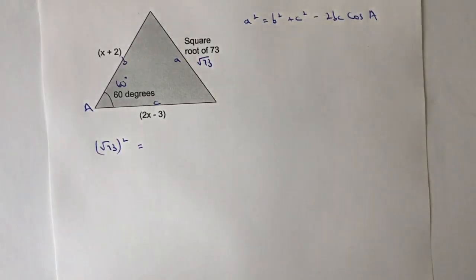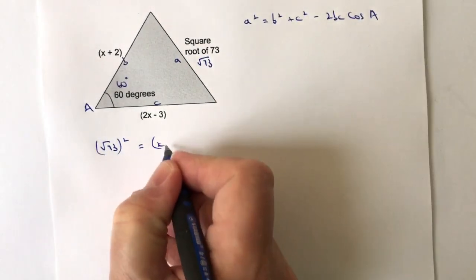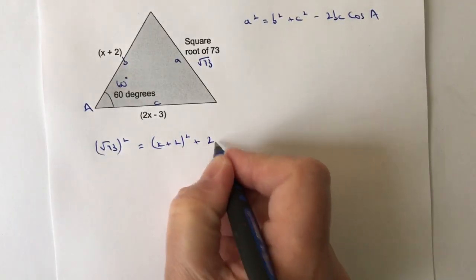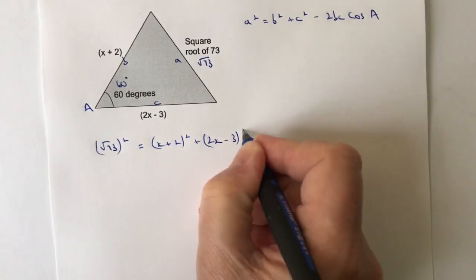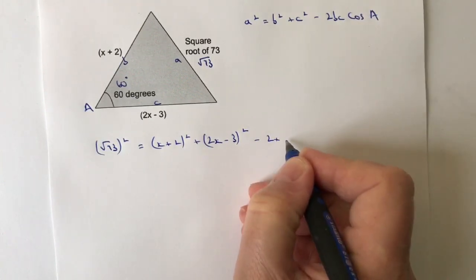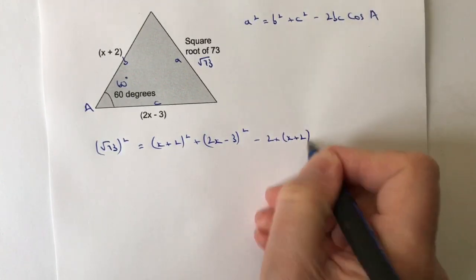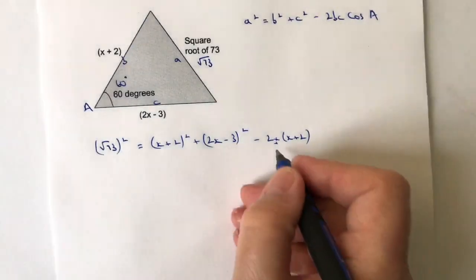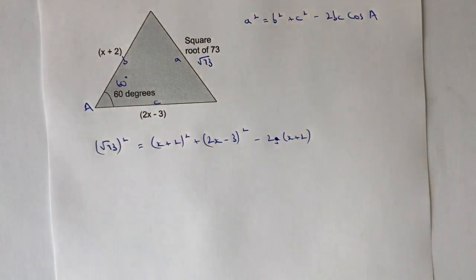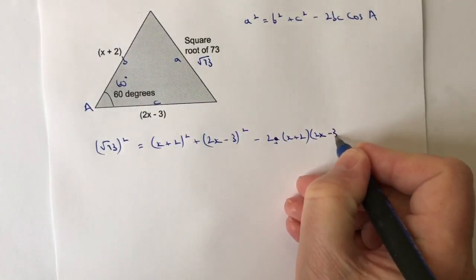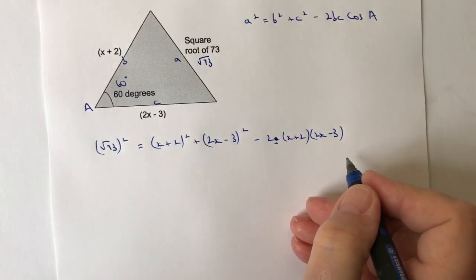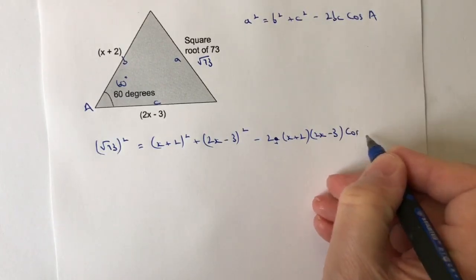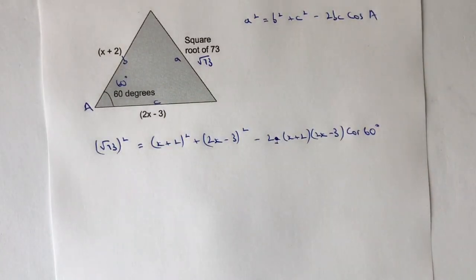That's going to equal b squared which is going to be x plus 2 squared plus c squared which is 2x minus 3 squared minus 2 times b which is x plus 2. I don't really like writing that because it looks like 2x, so I'm going to make that into a dot. And then I've got c which is going to be 2x minus 3, and then I've got the cosine of 60 degrees. Right, so we've got all the bits of information that we need and let's now start working this through.